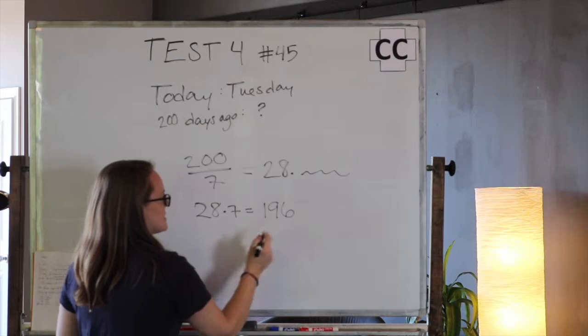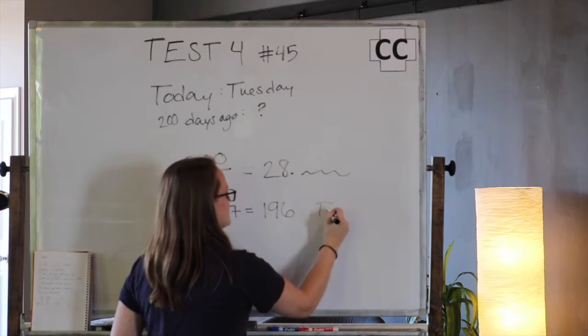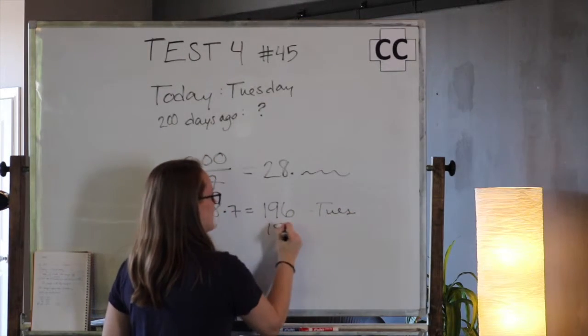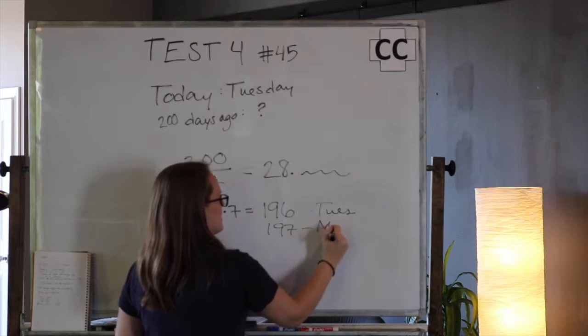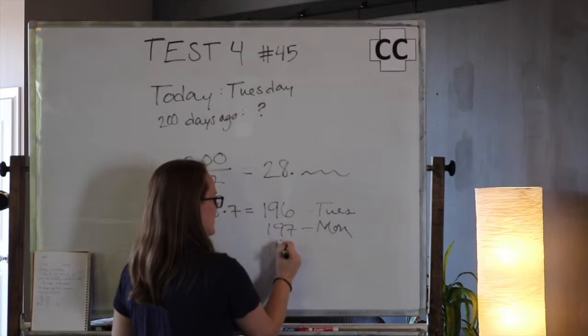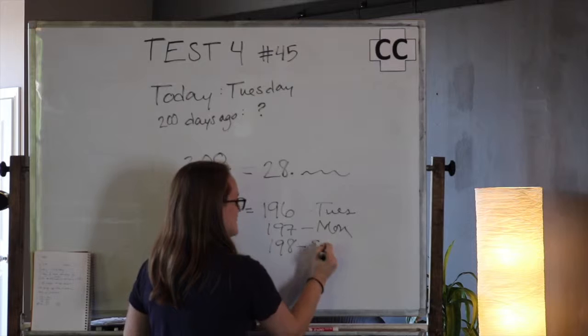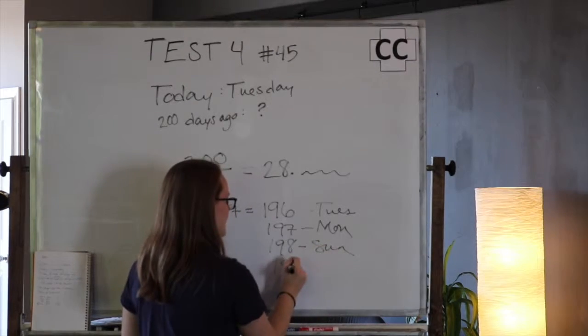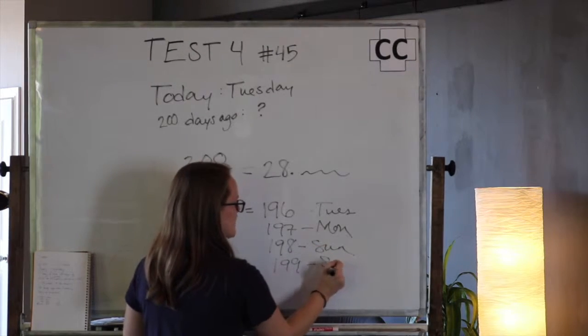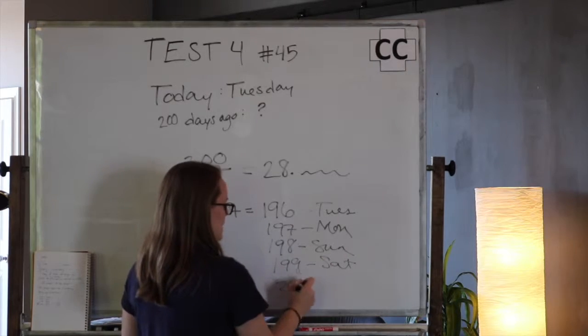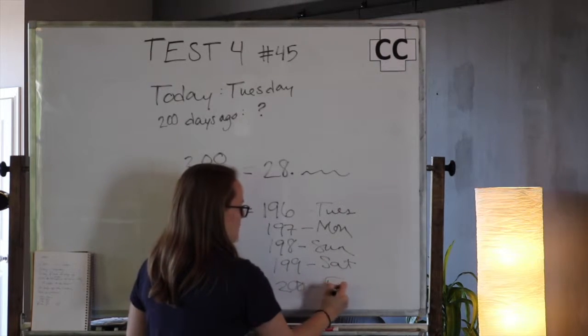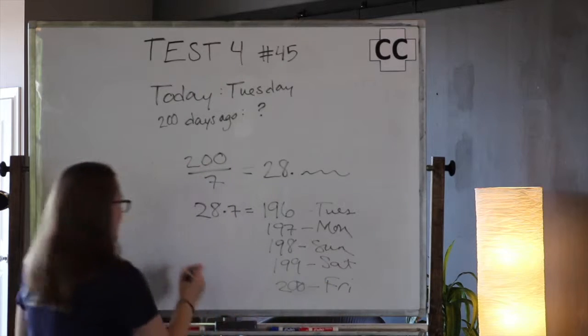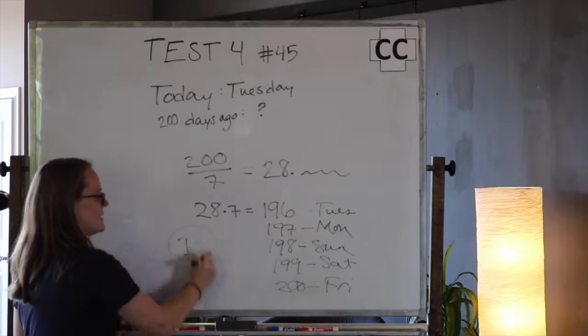So if 196 days ago was Tuesday, 197 days ago was Monday, 198 days ago was Sunday, 199 days ago was Saturday, and here's the big money, 200 days ago was Friday. And that is option D.